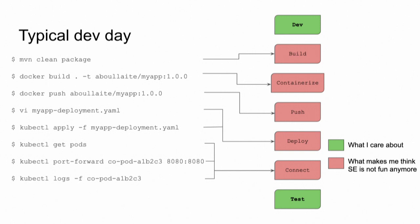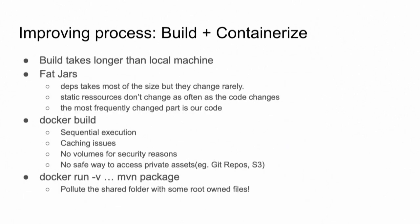One way we can improve how we work with containers is to understand the problems that working with containers introduces. For the build and containerize step, when we build images using Docker — the new artifact of the cloud — the builds using containers necessarily take longer than building on our local machine. There are problems using the fat jar, which contains everything your application needs: dependencies, resources, and the code we frequently change. Normally we change only the code, but we rebuild the whole fat jar. And since everything in containers is layered, even small changes create a new layer that needs to be pushed and pulled into the registry.